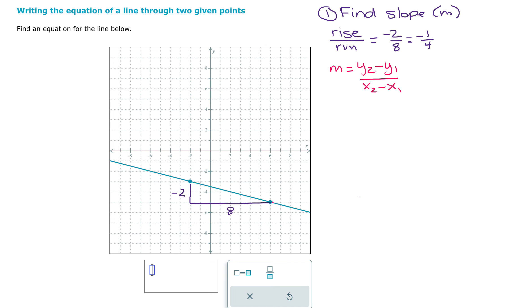So I need to identify the coordinates of these two points. So this first point is negative two, negative three. And my second point is six, negative five. So I'm going to choose which one I want to be x1, y1, and which one I want to be x2, y2. It doesn't really matter.